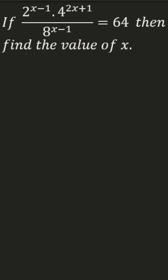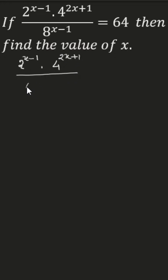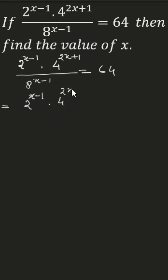Hello, we are going to solve this beautiful Olympiad equation. We have 2 to the power (x minus 1) times 4 to the power (2x plus 1), all over 8 to the power (x minus 1), is equal to 64.